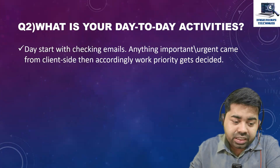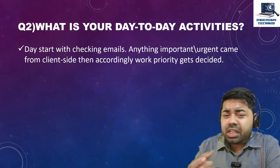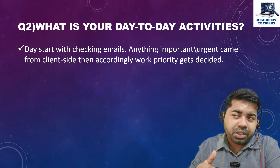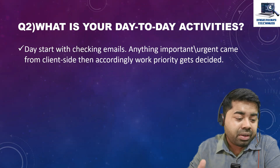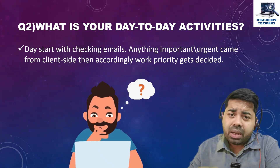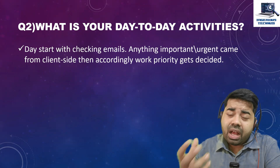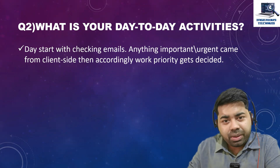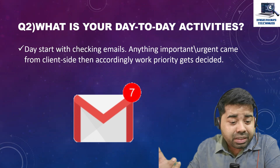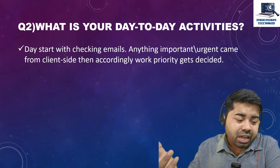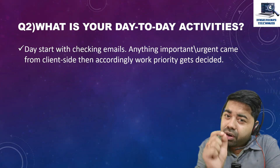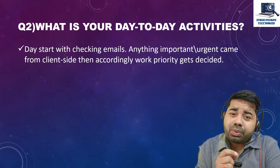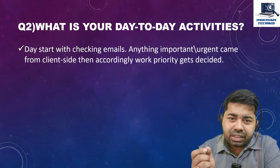When you log in to the system, generally you check emails first. Check if there is any urgent work from the client side, take the highest priority items, and work on those. Start with checking emails — anything important or urgent from the client side should be addressed accordingly. Do not miss your emails, as missing them might lead to escalation.